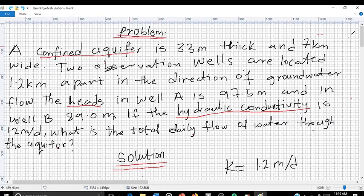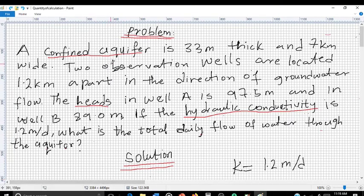So I'm going to show you how to solve this problem. The question is: a confined aquifer is 33 meters thick and 7 kilometers wide. Two observation wells are located 1.2 kilometers apart in the direction of groundwater flow. The heads in well A is 97.5 meters and in well B is 89.0 meters. If the hydraulic conductivity is 1.2 meters per day, what is the total daily flow of water through the aquifer?